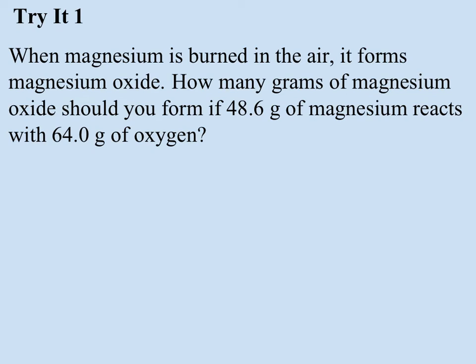For my balanced equation, I know I have magnesium. Since it's forming magnesium oxide, it binds with oxygen in the air. Magnesium oxide is just MgO, so that means I need a 2 here and a 2 here. If I write in my starting amounts, I have 64 grams of oxygen, 48.6 grams of magnesium.